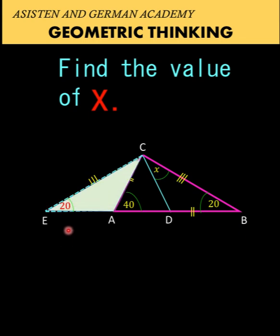Let's look at triangle ECA. Notice that this angle with a measure of 40 degrees is an exterior angle of two remote interior angles, angle E and angle ECA. By the exterior angle theorem, the sum of these two remote interior angles must equal 40 degrees.